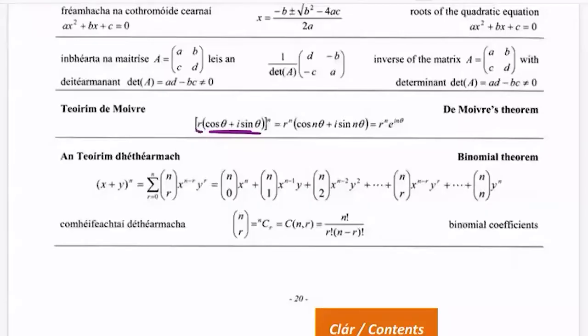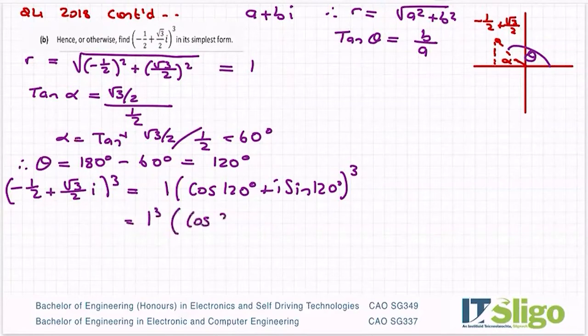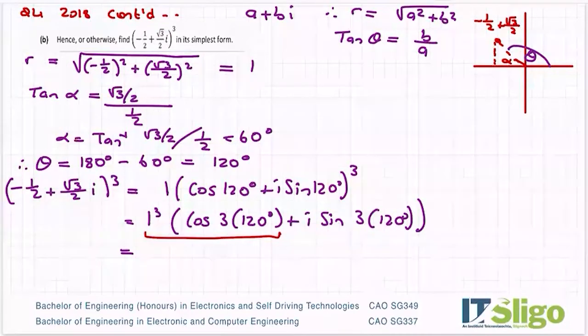So then apply De Moivre's theorem. It's r to the power of 3, three times the angle. So it's equal to 1 to the power of 3 cos three times the angle plus i sine three times the angle.